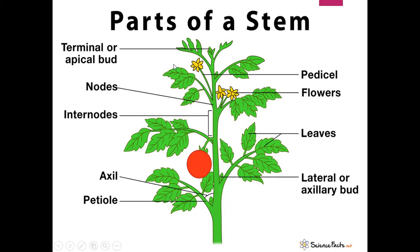The apical or terminal bud is the bud which is present at the tip of the stem. It helps in the lengthwise growth of the plant. The axillary bud is the bud which is present where leaves make an angle with the stem. Here you can see there is an angle between the stem and the leaves, and the bud develops in that angle.